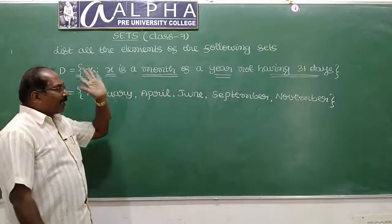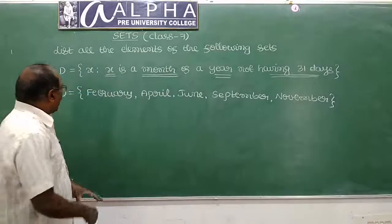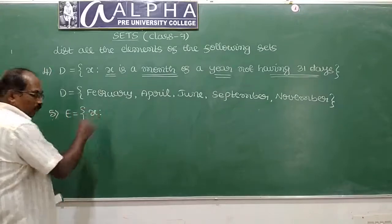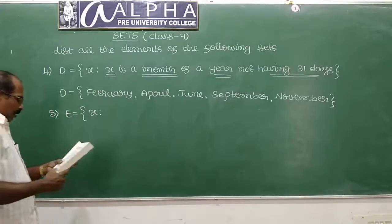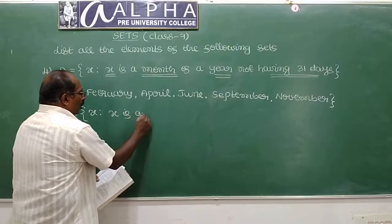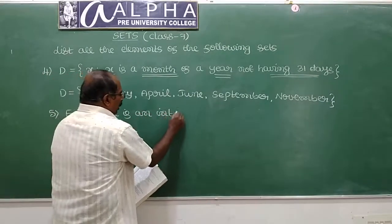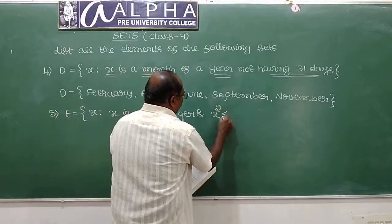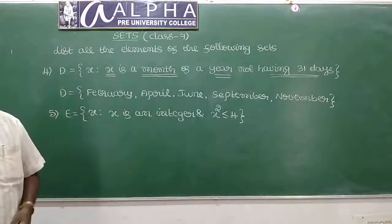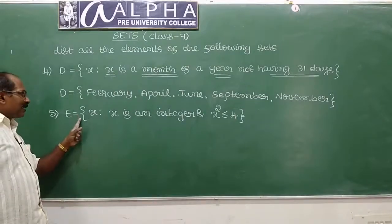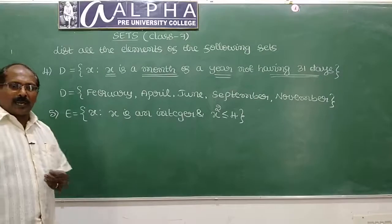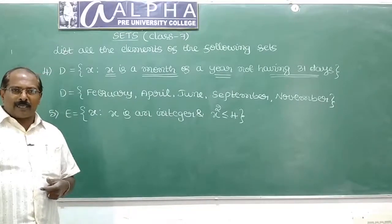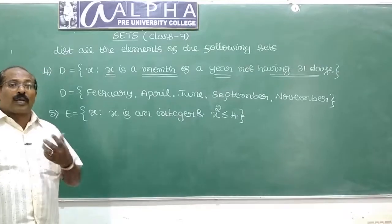The next problem: set of all x such that x is an integer and x squared is less than or equal to 4. We have to list all elements of this set. Again, we are given the set in set-builder form. You know there are two methods of representing a set: one is the roster method, also called tabular method, and another is set-builder form, also called property method.